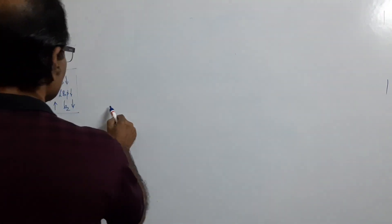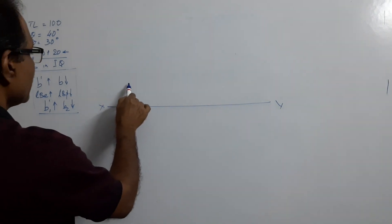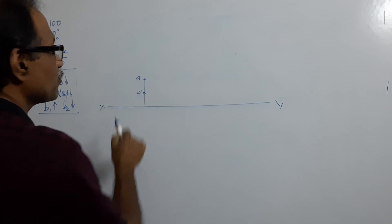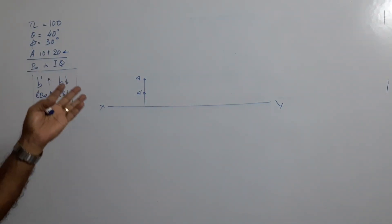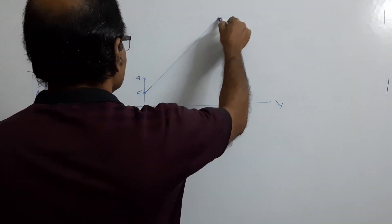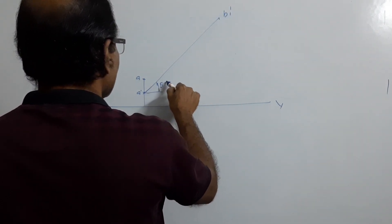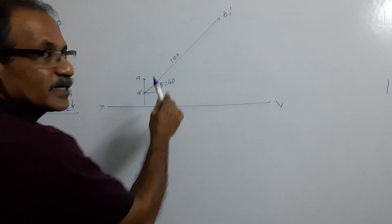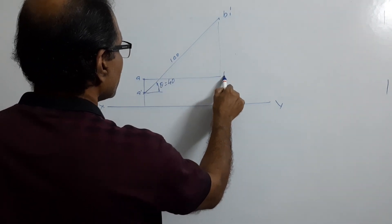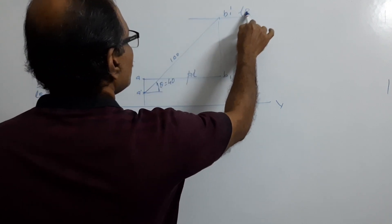Now draw the XY line first. Locate A-dash and A — both are above XY because A is in the second quadrant. Assume the line is parallel to VP, inclined at theta = 40°, and draw the elevation first to get b1-dash. Drop it down, draw a horizontal line through A, and you get the b1 plan line and lbe.